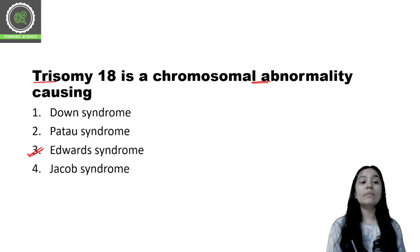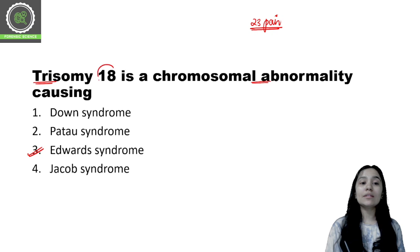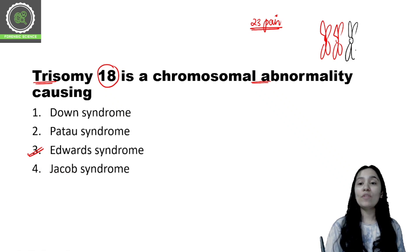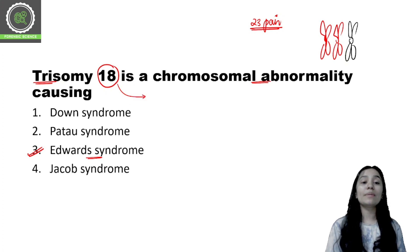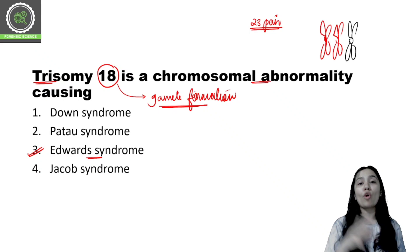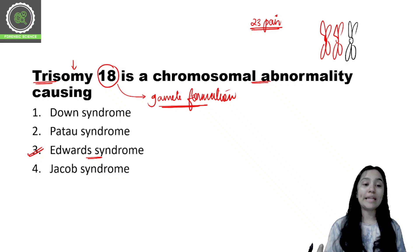To understand trisomy 18: when trisomy occurs, it means we have 3 chromosomes instead of the usual pair. Humans have 23 pairs of chromosomes. In trisomy, we have one extra chromosome along with the other two — so 3 sets instead of the normal 2 — occurring at the 18th chromosome position. This happens because during gamete formation, cell division does not occur properly, so chromosomes do not divide correctly, causing trisomy at the 18th chromosome, which we call trisomy 18 or Edward syndrome.